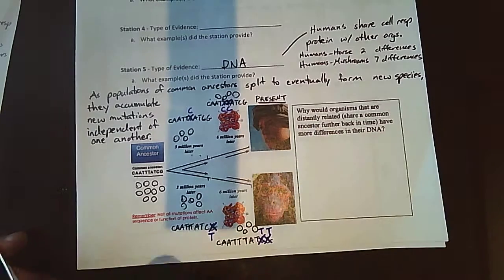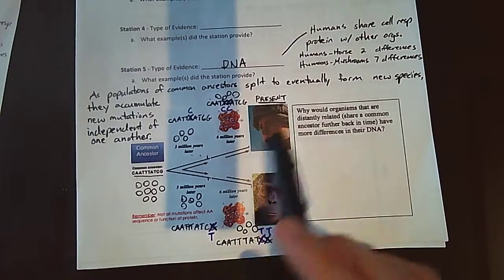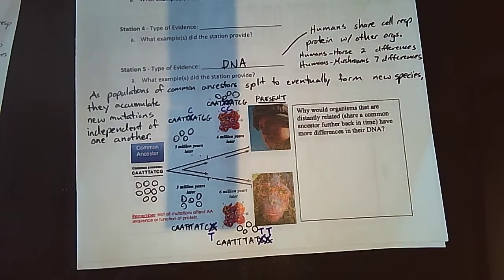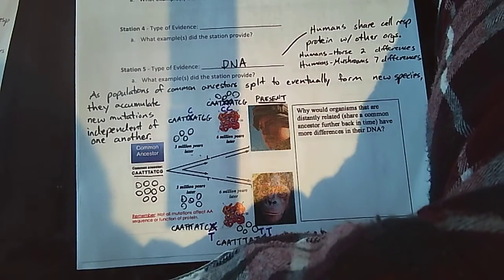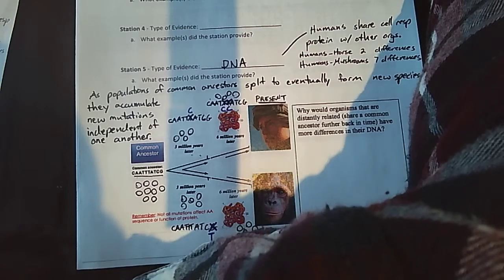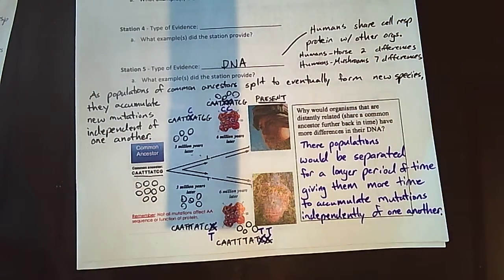So let's look at this question now. Why would organisms that are distantly related, that means that they share a common ancestor further back in time, why would they have more differences in their DNA? And I want you guys to answer this question online first before I show it.